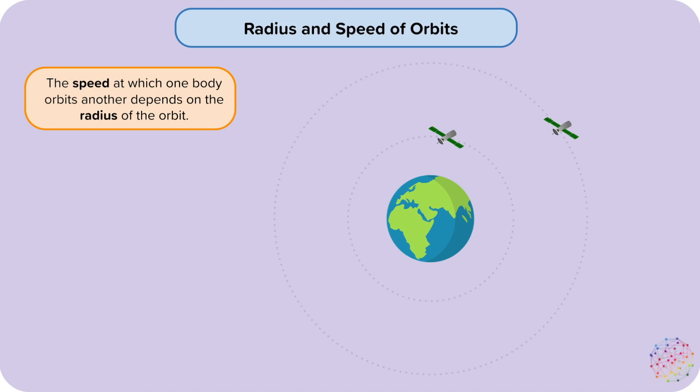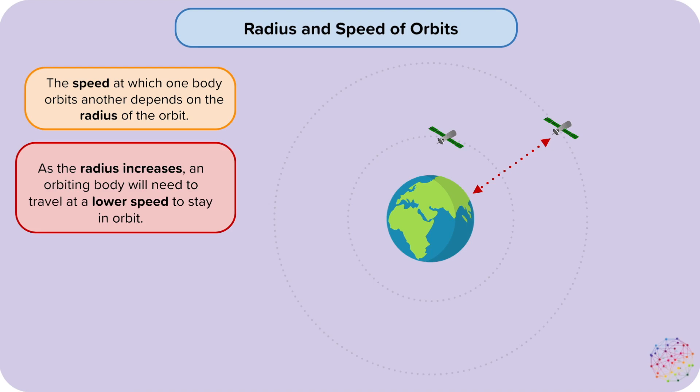The speed at which one body orbits another depends on the radius of the orbit. As the radius increases, an orbiting body will need to travel at a lower speed to stay in orbit.